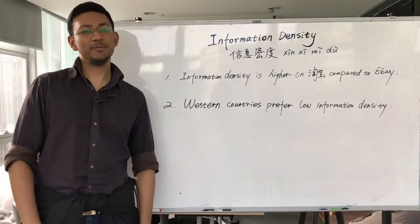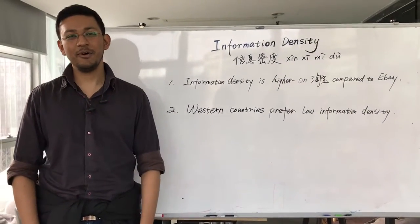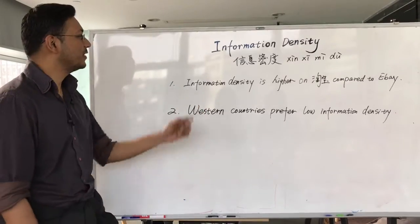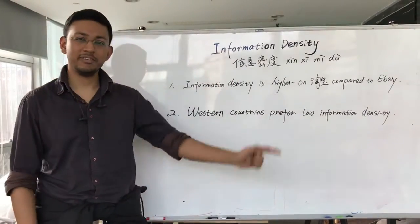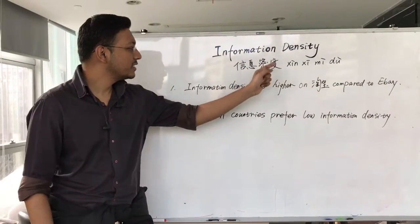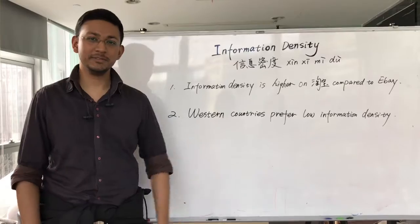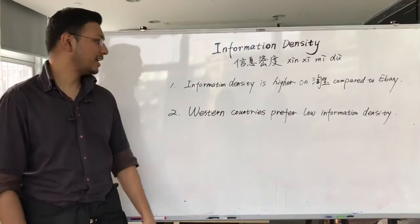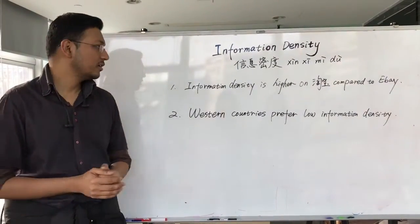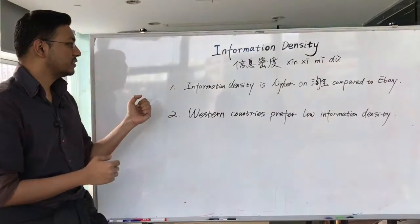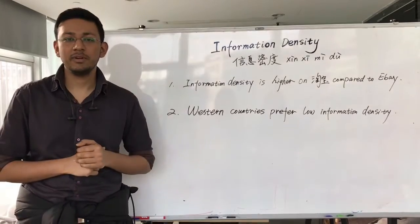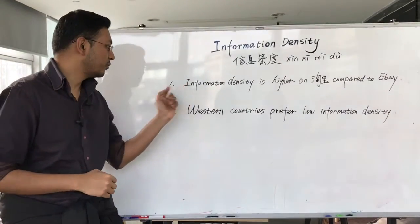Hello everyone, welcome to another episode of Learning English. Today's word is 'information density' — the Chinese word is [信息密度] — and let's look at how it is being used. The context is: how much information is on a given page.